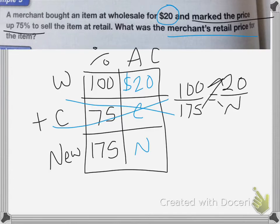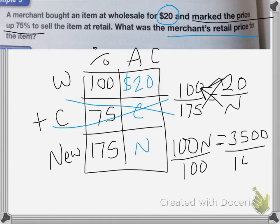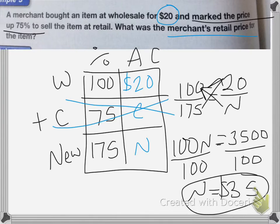We do cross products. 100N equals 20 times 175, which is 3500. Divide both sides by 100. And N is equal to 35. So the new price is $35.